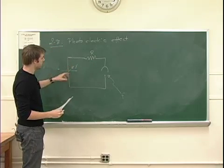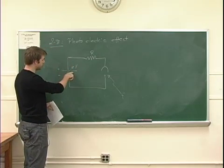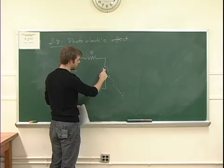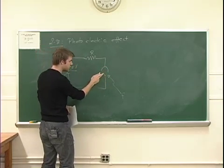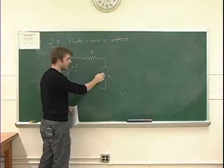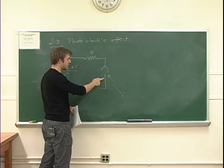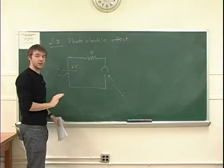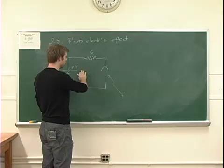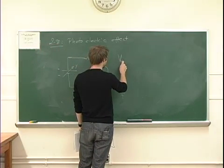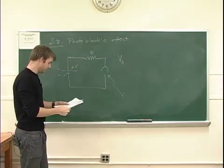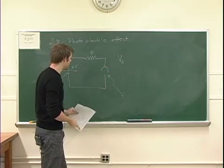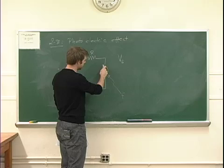As we start increasing V, since electrons in this circuit with this polarization want to flow counterclockwise, if we set them free, eventually at some critical potential they're going to decide to turn around. If V is sufficiently small they may still make it over to the other side, but if V is sufficiently large they're going to turn around and not reach the other plate, and as such we won't see any current anymore. This critical potential where this occurs is called the stopping potential, indicated by V subscript s.